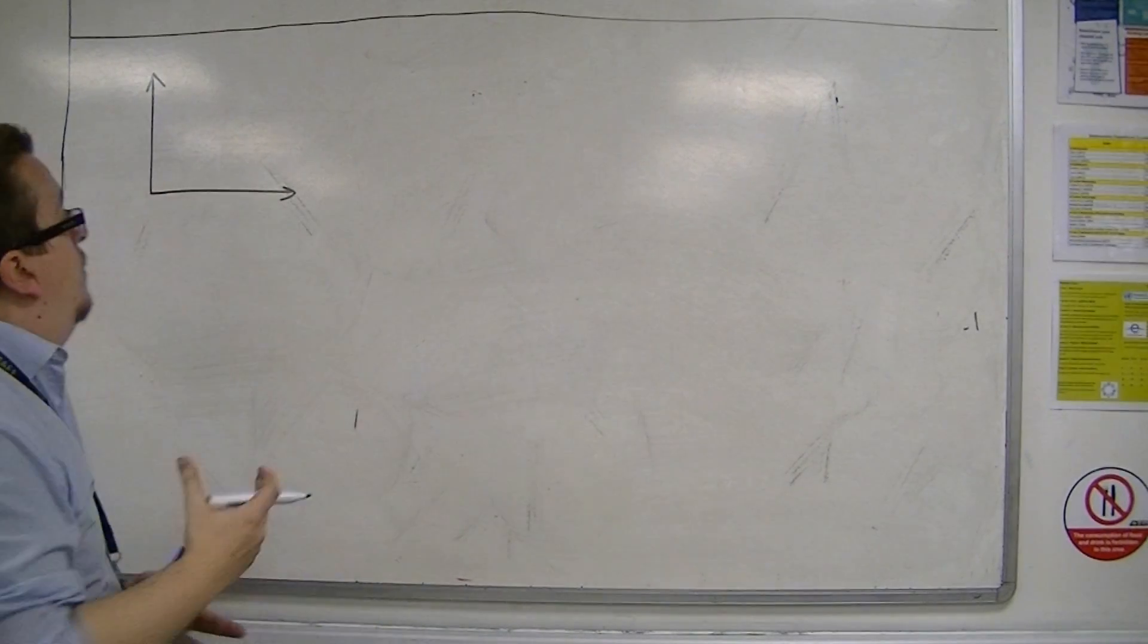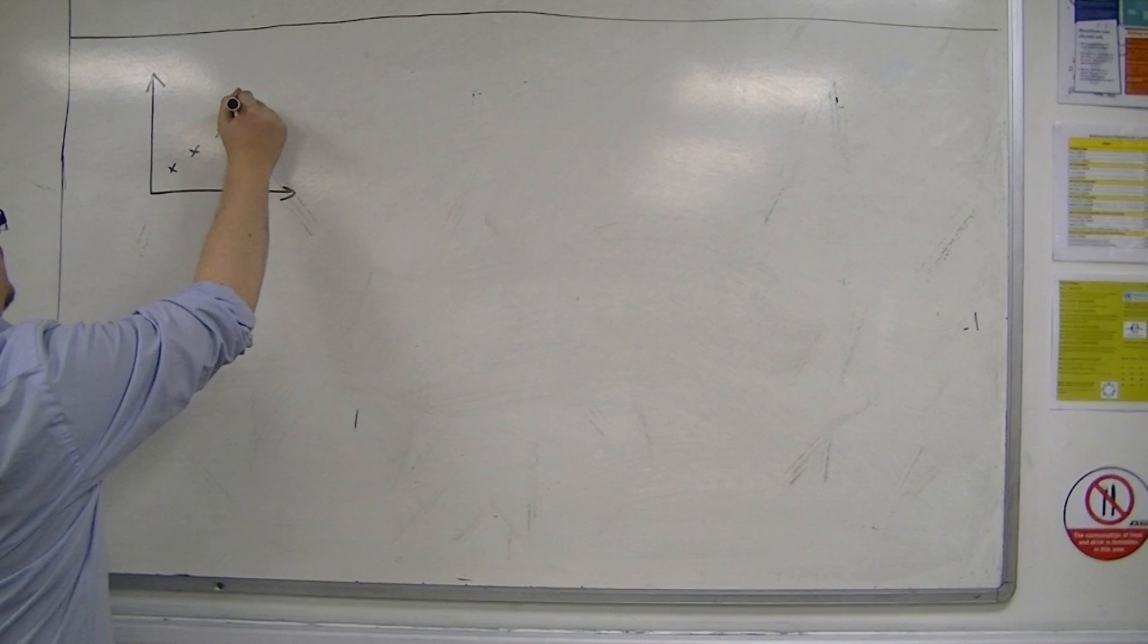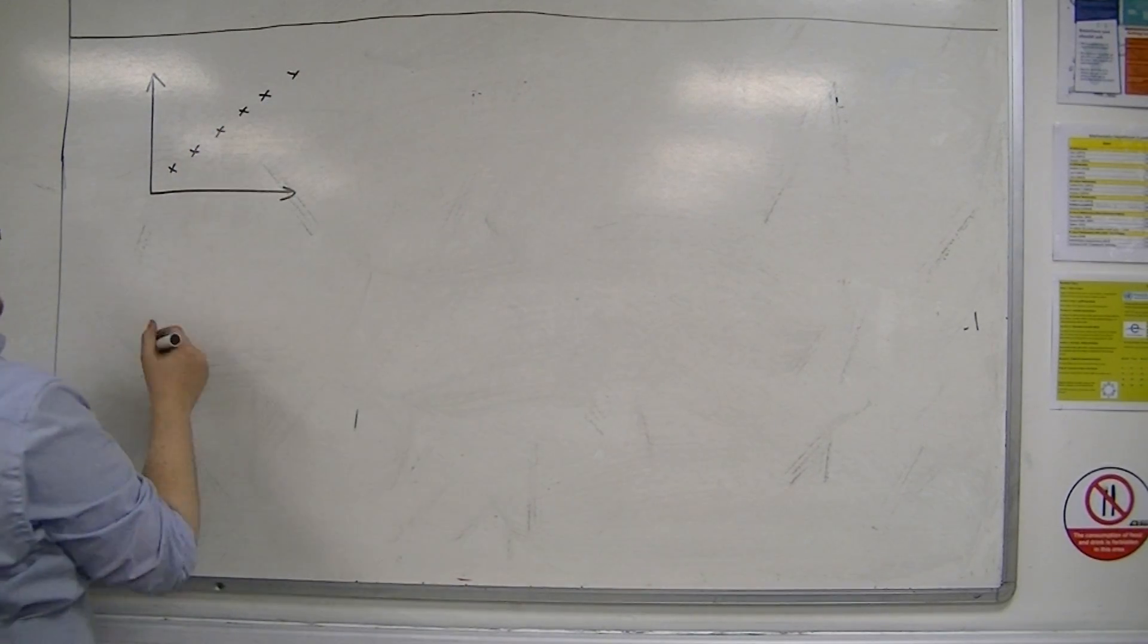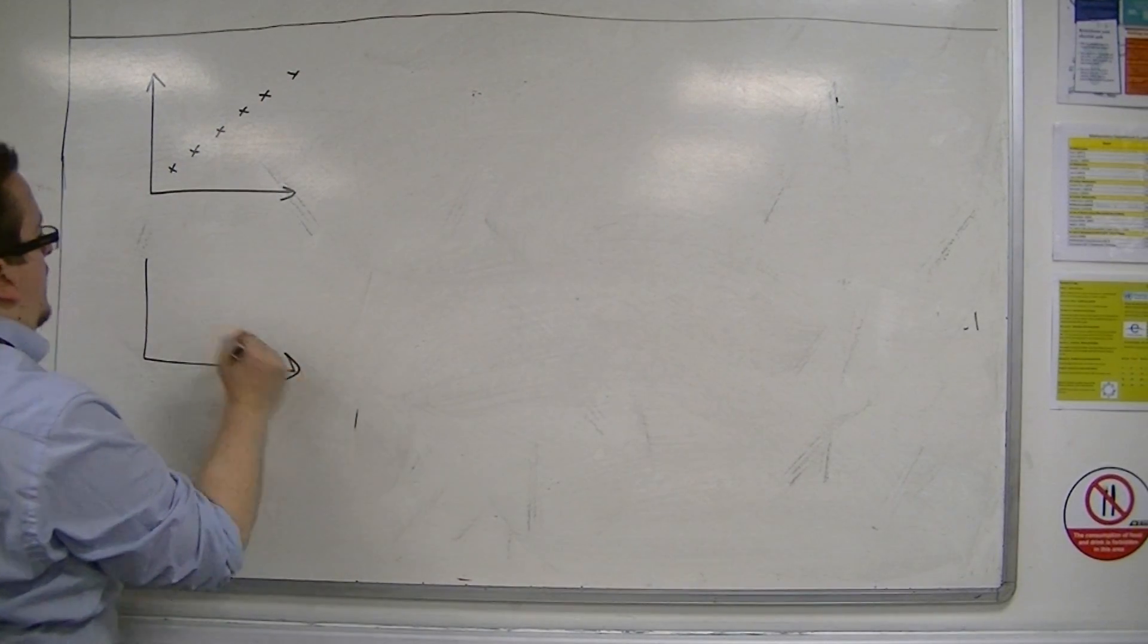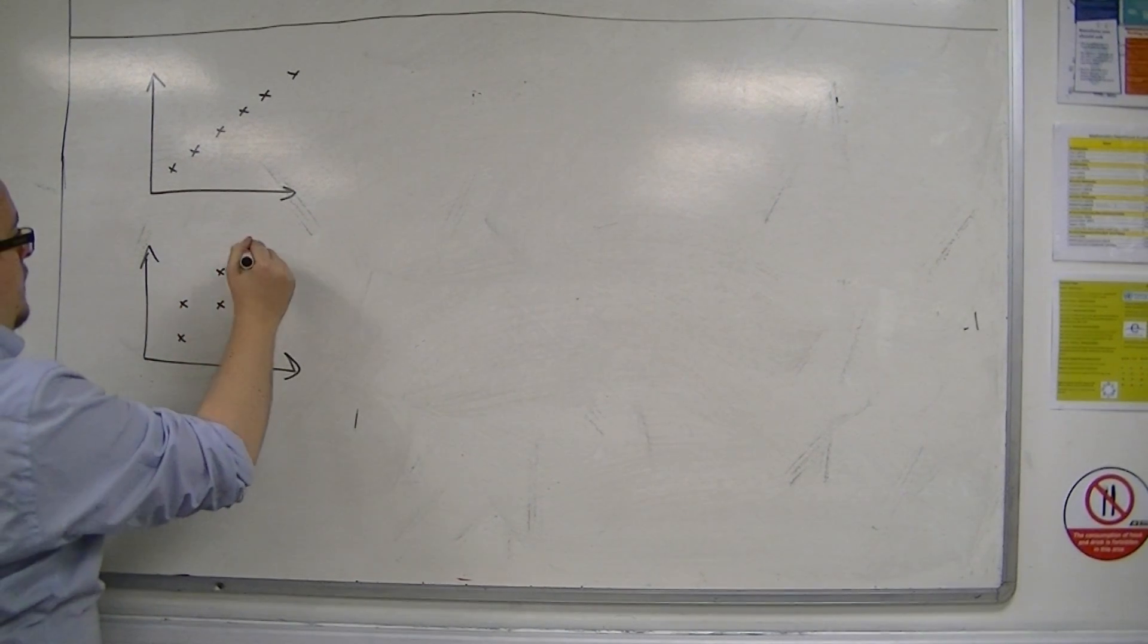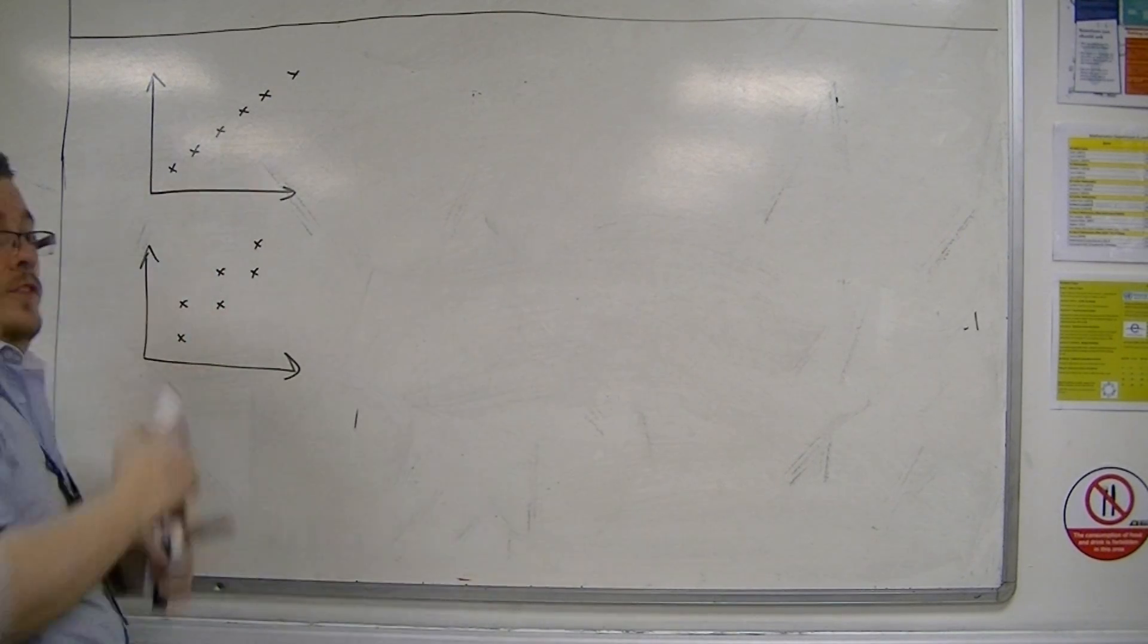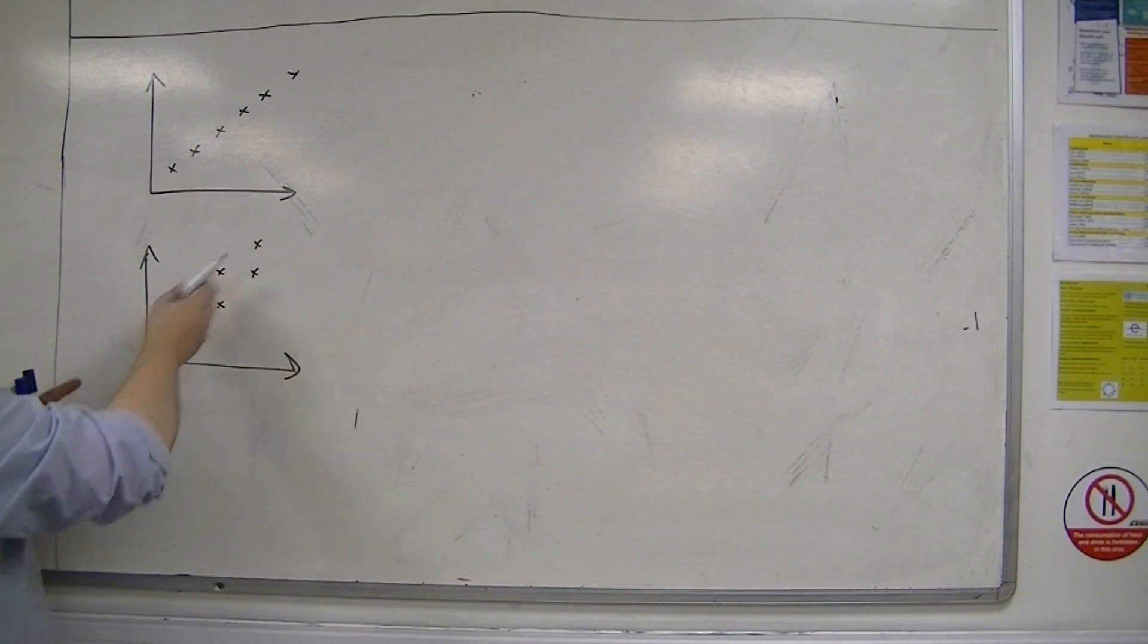So you may well understand the concept of positive correlation. So here are a couple of examples of positive correlation where you can see that the data is going from the bottom left to the top right in both cases.